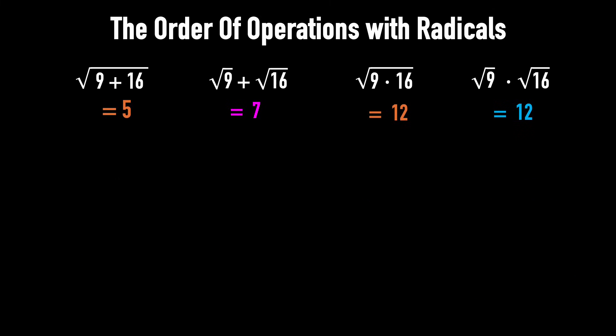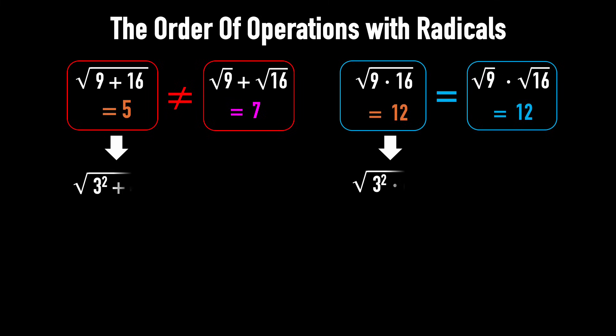Now, let's compare. Example 1 is not equal to example 2, but example 3 is equal to example 4. To show you what this means in your math practice, I rewrite 9 as 3 squared and 16 as 4 squared, the square root of 9 as 3, and of 16 as 4.